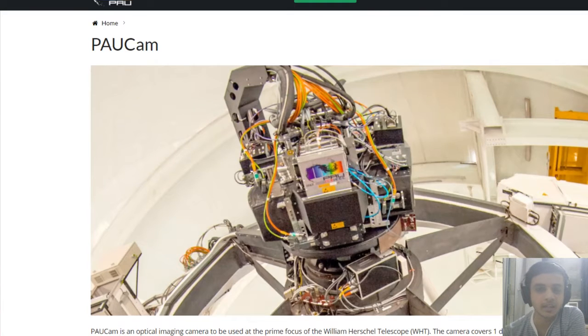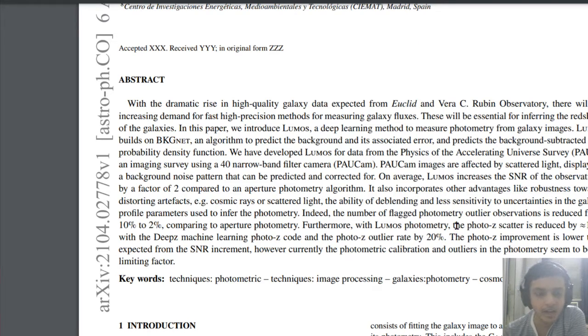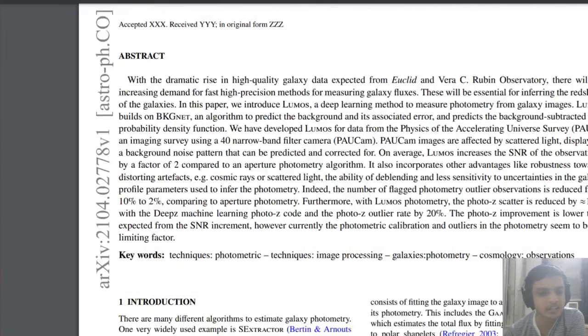This is the camera that they use to generate the data set. The new algorithm that they have proposed is called Lumos L-U-M-O-S. They compared it with the aperture photometry algorithm and they said that it improves by a factor of two.